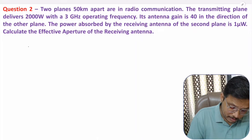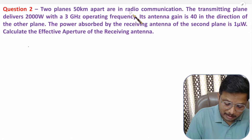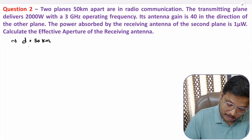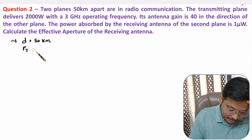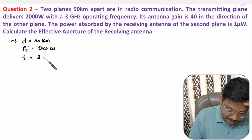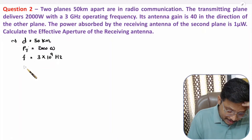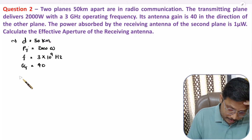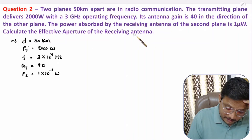In the second question, two planes 50 kilometers apart are in radio communication. The transmitting plane delivers 2000 watts at an operating frequency of 3 GHz (3 × 10⁹ Hz). Its antenna gain is 40 in the direction of the other plane. The power absorbed by the receiving antenna of the second plane is 1 microwatt (1 × 10⁻⁶ W).